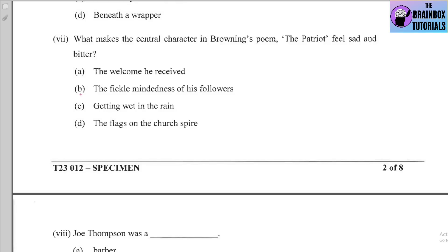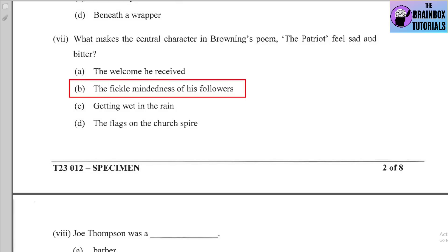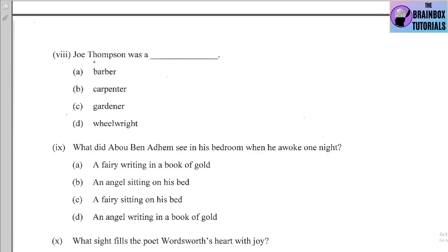Number seven: What makes the central character in Browning's poem 'The Patriot' feel sad and bitter? Options: (a) the welcome he received, (b) the fickle-mindedness of his followers, (c) getting wet in the rain, (d) the flags on the church spire. The correct answer is (b) — the fickle-mindedness of his followers.